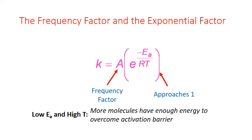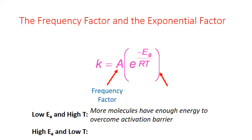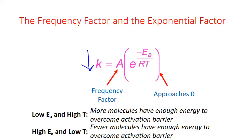The end result is a higher value of k. If we go in the opposite direction and have a low temperature and high activation energy, the exponential factor approaches zero. This means we'll have a lower value of k and indicates that fewer molecules in the sample have enough energy to overcome the activation barrier.